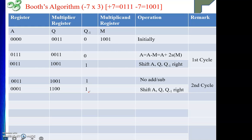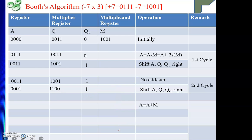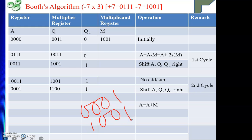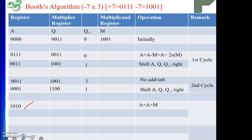Now we repeat again for the third cycle. The two consecutive bits are Q zero equals 1 and Q minus one equals 1 — wait, we are moving from 1 to 0 — that is positive, so we perform A equals A plus M. Current A is 0 0 0 1 and M is 1 0 0 1. Adding: 0 0 0 1 plus 1 0 0 1 gives 1 0 1 0. Q remains 1 1 0 0 and Q minus one remains 1.